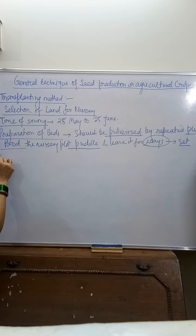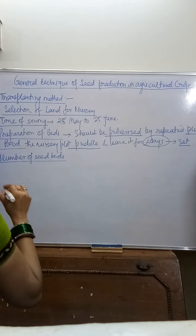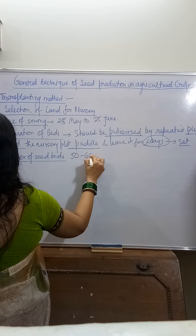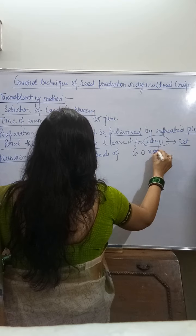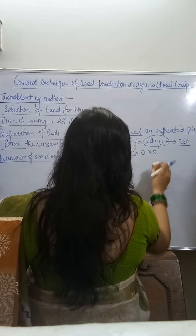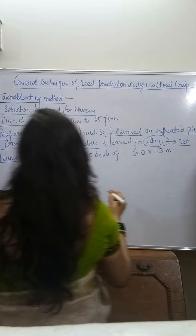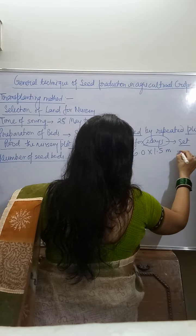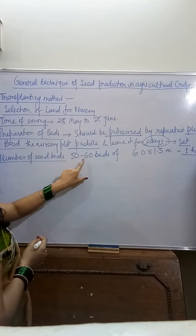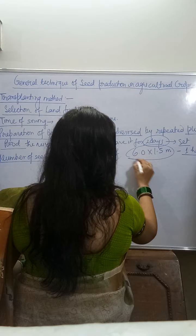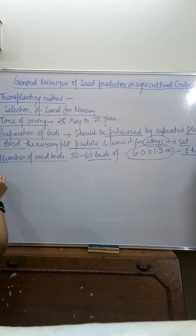Point four: number of seed beds. About 50 to 60 beds of size 6.0 × 1.5 meters are sufficient for raising seedlings for 1 hectare of land. एक हेक्टेयर जमीन के लिए 50 से 60 beds इस size के sufficient होते हैं।